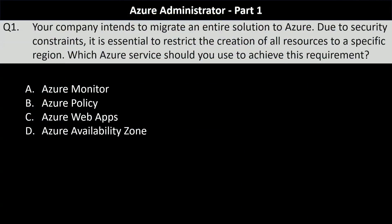First question of the series. Your company intends to migrate an entire solution to Azure. Due to security constraints, it is essential to restrict the creation of all resources to a specific region. Which Azure service should you use to achieve this requirement? Your options are Azure Monitor, Azure Policy, Azure Web Apps, or Azure Availability Zone.